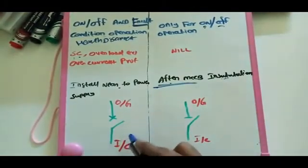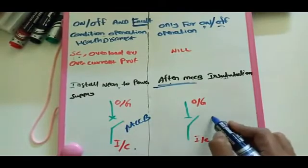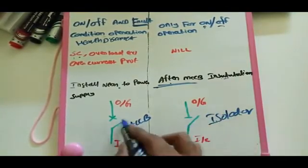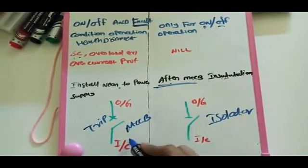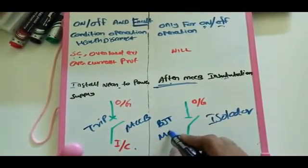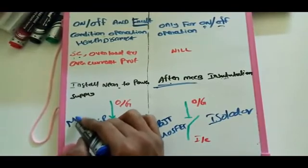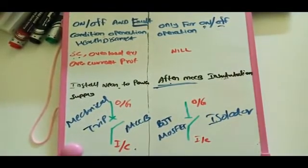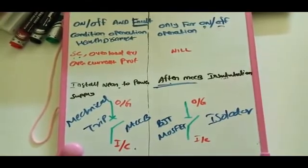The MCCB and Isolator symbols look similar, but the MCCB symbol has an additional cross indicating the tripping signal, which the Isolator symbol does not have. The Isolator acts as a switching device internally, while the MCCB operates as an electromechanical device using a thermal mechanism inside. Mainly, the Isolator is used for switching high circuits on and off, while the MCCB is used for tripping and protection. Thank you for watching.